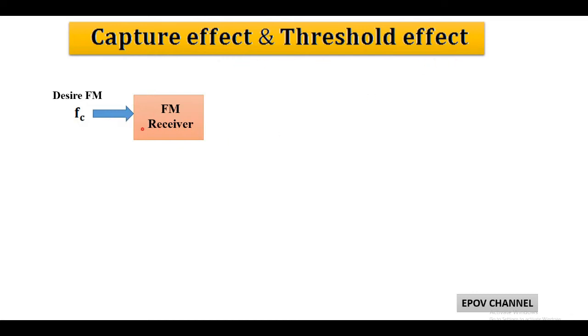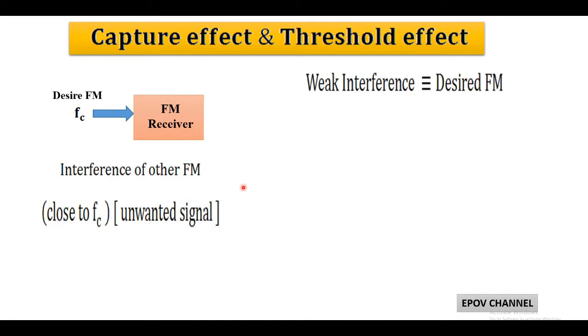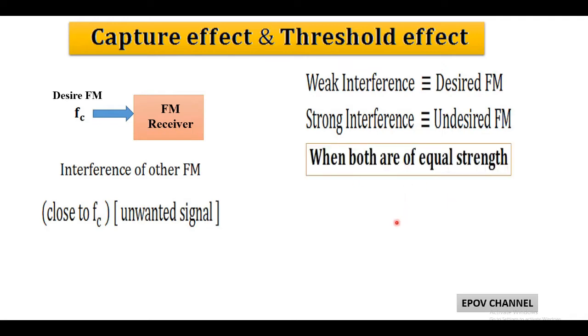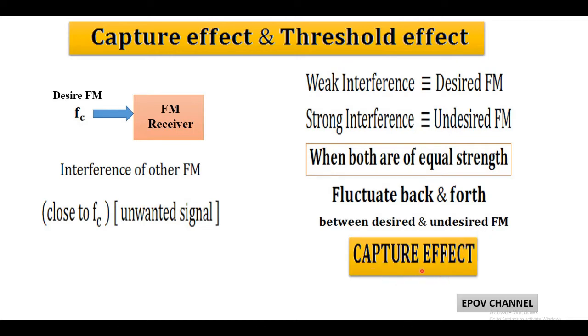During transmission of FM wave via channel, there may be possibility of interference by some other FM wave whose frequency is very close to the main FM signal. When this interference signal is weak, the received signal is called desired FM wave. When interference is very strong, the received signal becomes undesired FM wave. But the main problem arises when strength of both desired and undesired FM are nearly equal, and due to this, fluctuations occur back and forth between desired and undesired FM wave. This phenomenon of fluctuations is called capture effect.